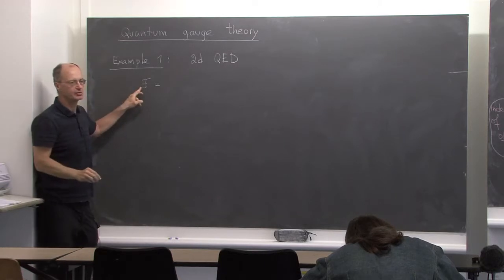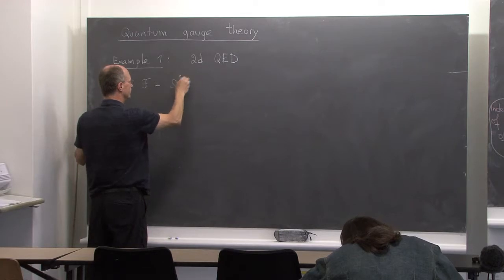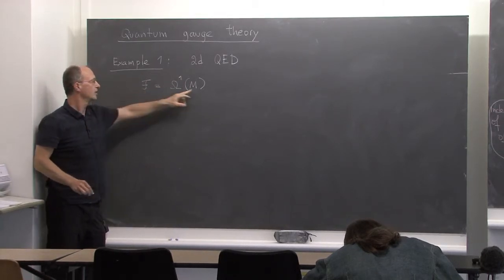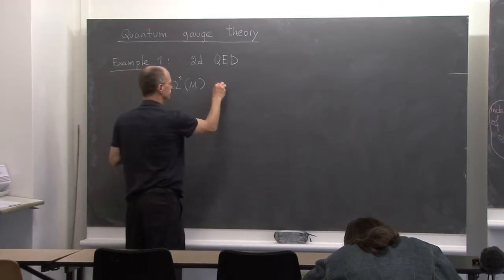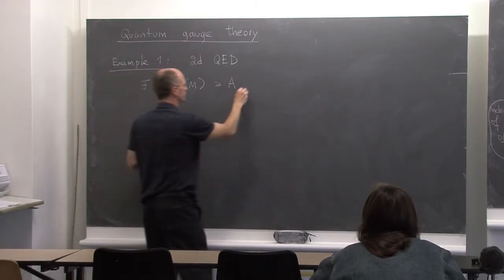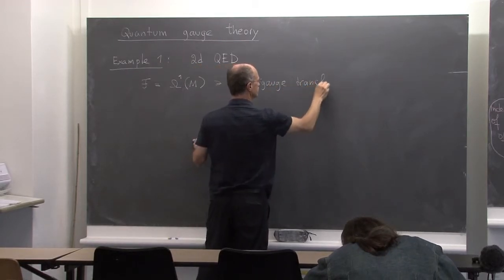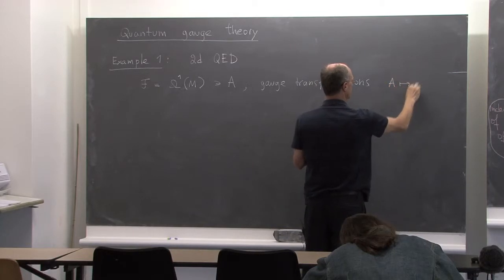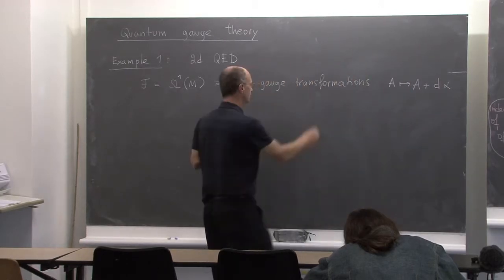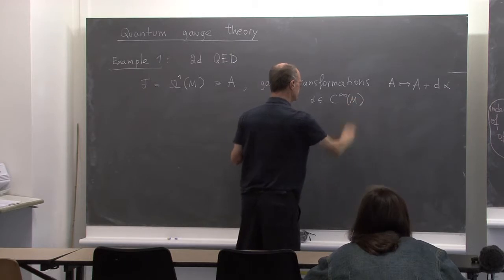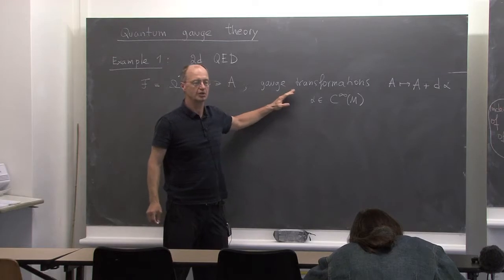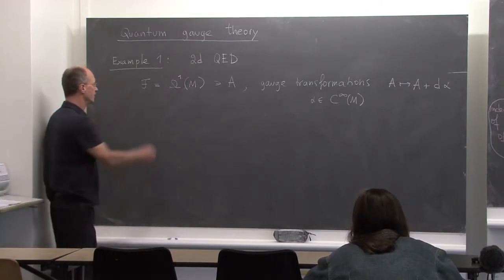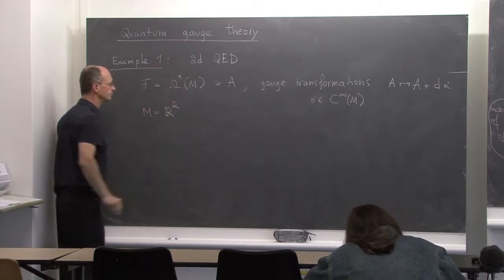Recall that the space of fields in quantum electrodynamics — at least for a trivial bundle — is just one-forms. A is the gauge field. Gauge transformations are A mapped to A plus d alpha, where alpha is a C-infinity function. This is for gauge group the real line; we'll also consider the group U(1) in a few minutes. I'll choose M to be R².